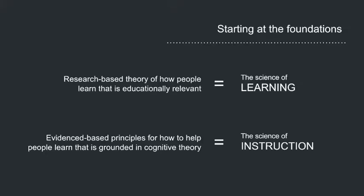Much has happened in the last 100 years as the field of cognitive science has blossomed. What we now have is the makings of a research-based theory of how people learn that applies to the educational context — that is the science of learning — and guiding principles into how to help people learn: the science of instruction.